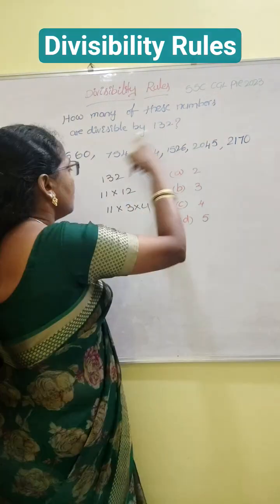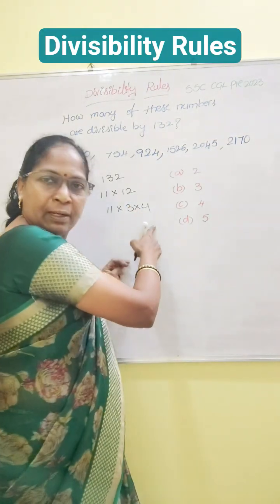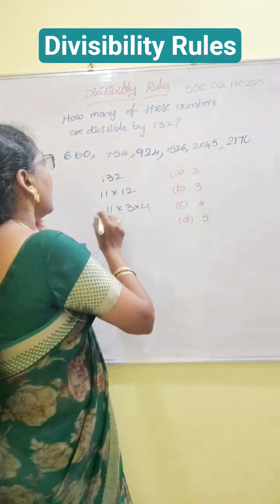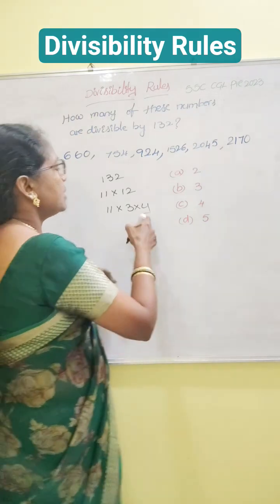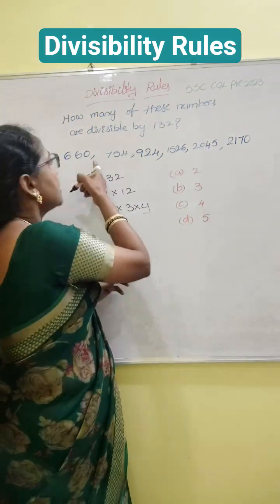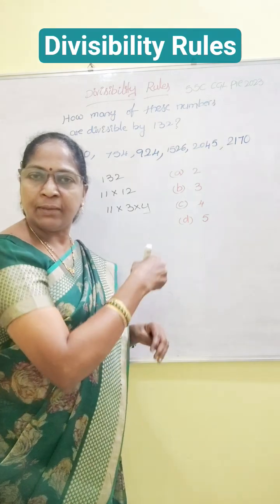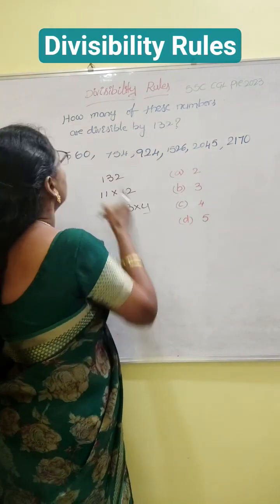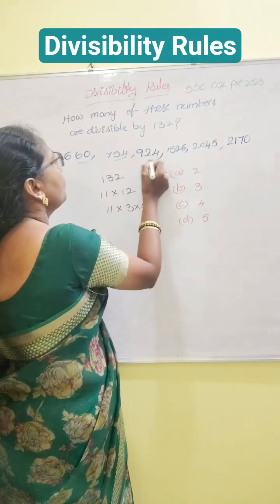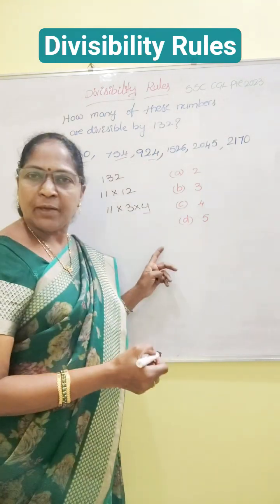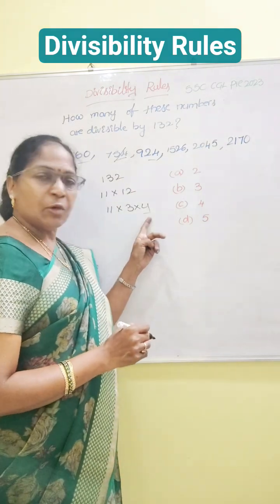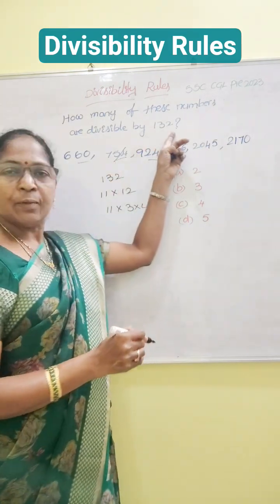If a number is not divisible by any one factor, then the number is not divisible by 132 also. So one by one you have to check it. The divisibility rule of 4: if the last 2 digits are divisible by 4, then only it is divisible. Check — 416, yes, it is divisible. In this number, the last 2 digits are 54. Is 54 divisible by 4? No, it is not divisible. Not divisible by 4 means the entire number is not divisible by 132 also.